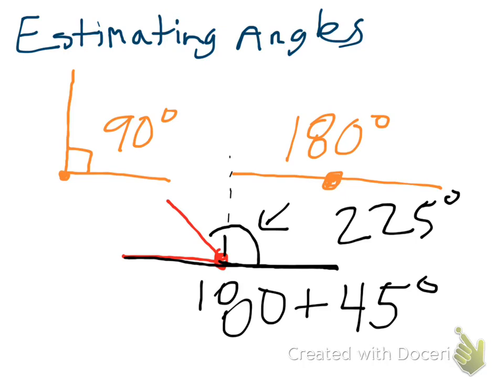So when we're estimating, we're just trying to come back to angles that we know, 90 degrees, 180 degrees, or we can even think about a circle being 360 degrees. And using that to help us estimate a reasonable answer.